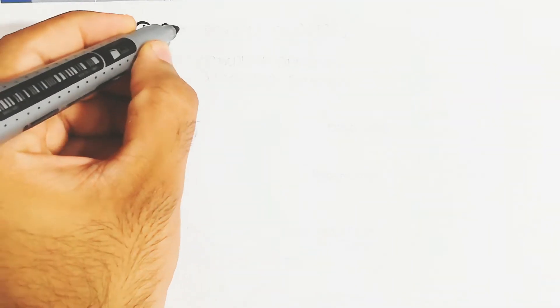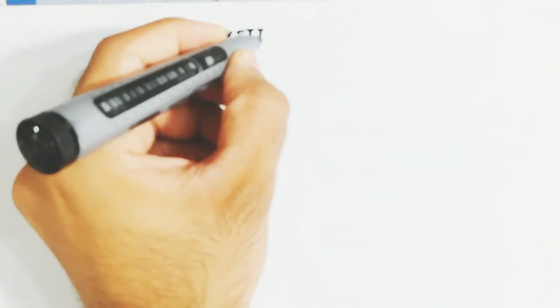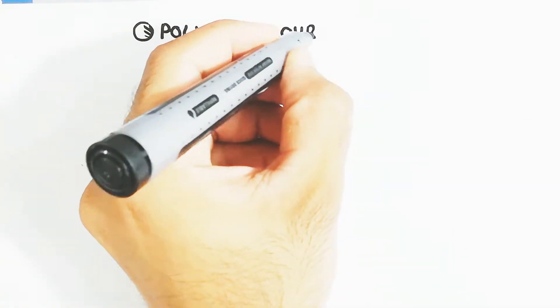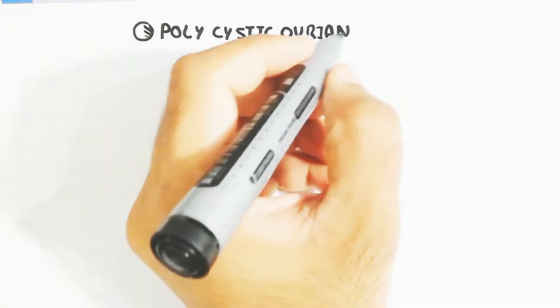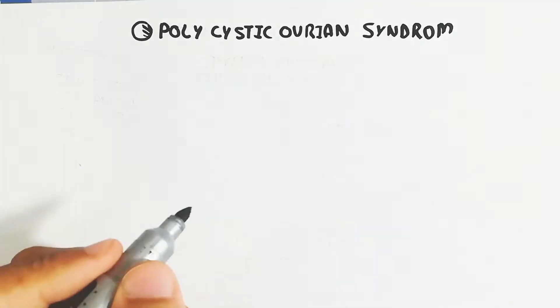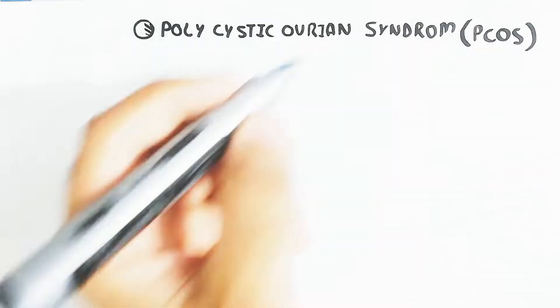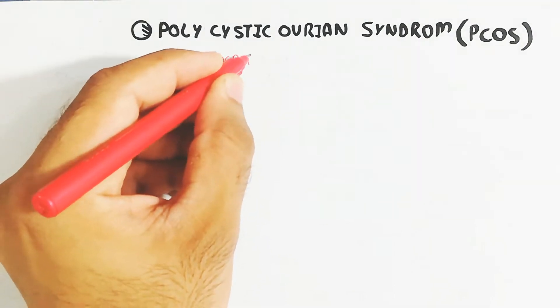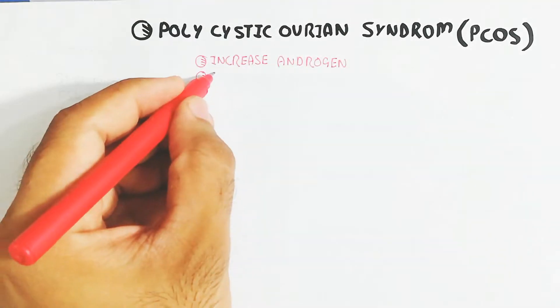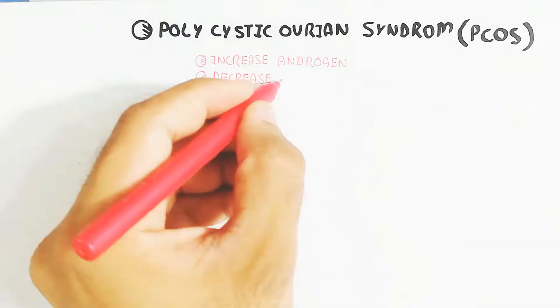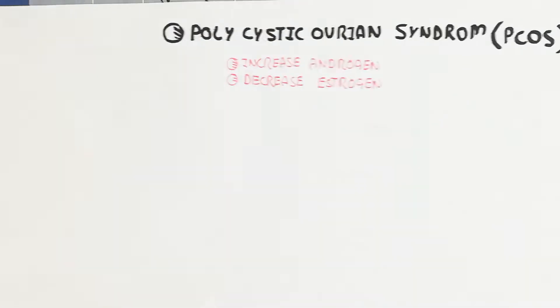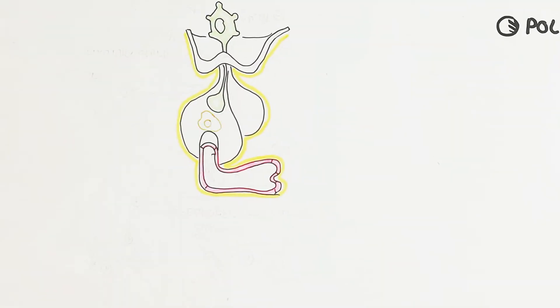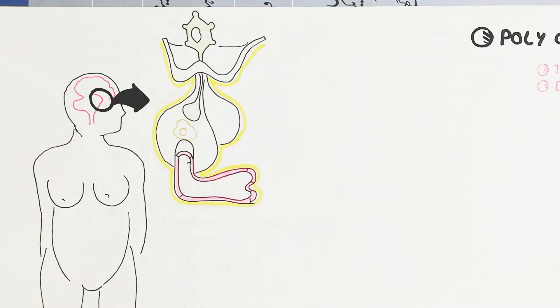In this video we will discuss polycystic ovarian syndrome, also known as PCOS. Basically, PCOS is due to an increase in androgens in the female. The female hormone estrogen will decrease while the male hormone androgen will increase, which triggers the polycystic ovarian syndrome.